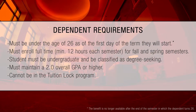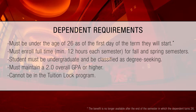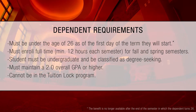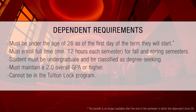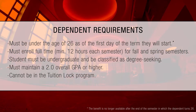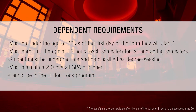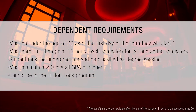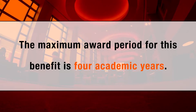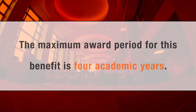Students must be undergraduate and classified as degree-seeking, must maintain a 2.0 overall GPA or higher, and they cannot be in the tuition block program. Students should also note that the maximum award period for this benefit is four academic years.